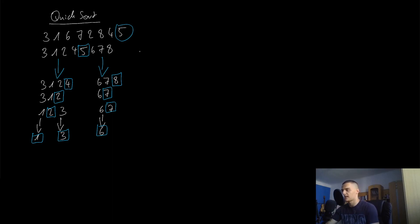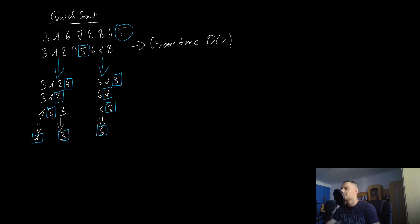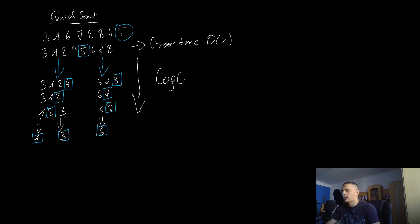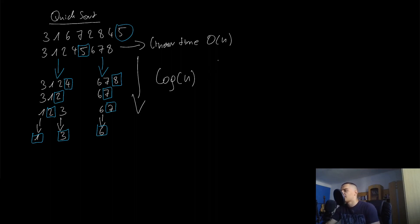We pick a pivot element in constant time, then arrange all elements relative to that pivot by comparing them, which is possible in linear time — O(n). Then usually we split the problem size again and again, which is similar to logarithmic time on average. We have multiple levels, each requiring a linear operation, but with smaller problem sizes. So usually you end up with log n times a linear operation — O(n log n).